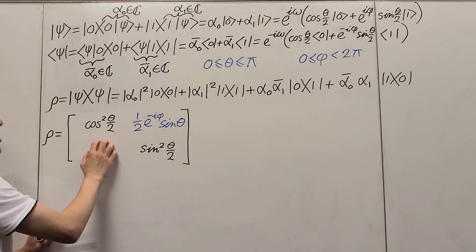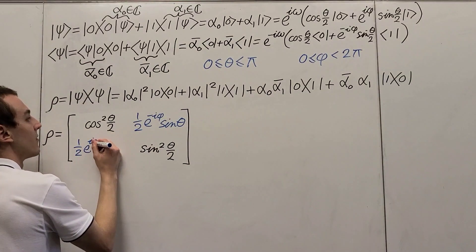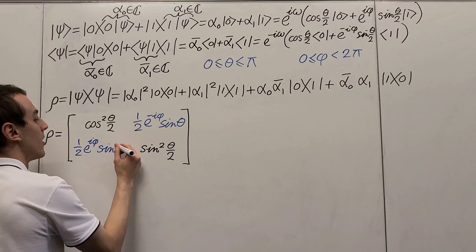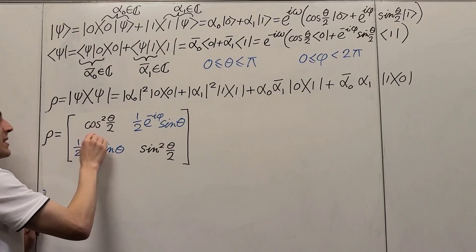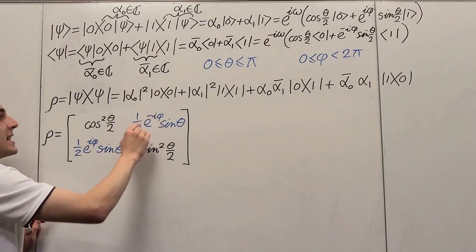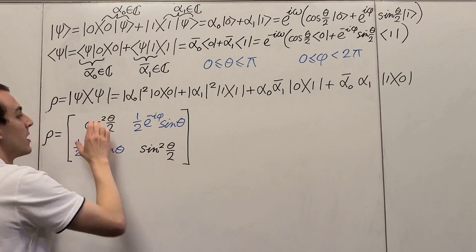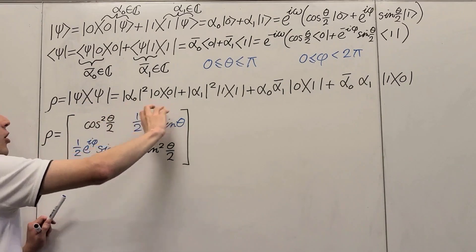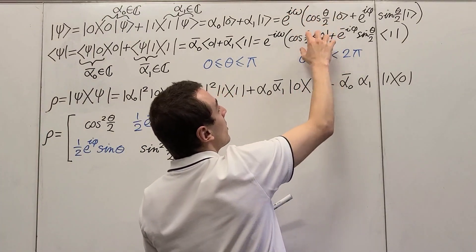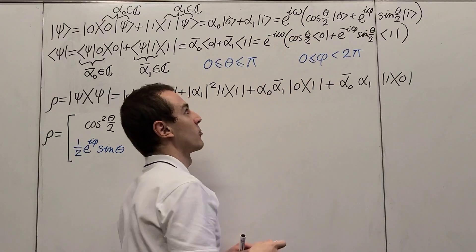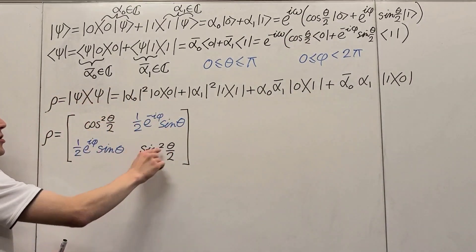The other off-diagonal term is one half e to the plus i phi times sine of theta. The difference between these two terms is just a plus versus minus in the exponent — they are complex conjugates of each other, so we take the complex conjugate when moving across the diagonal. Notice that every time we multiply a term from the ket with a term from the bra, the global phase factors cancel out. That is why the global phase factor has no physical significance — it doesn't affect any terms in the density matrix.